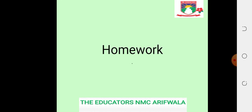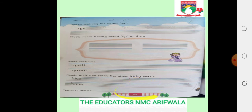Now the teacher will tell you about your homework. Your homework is: you will solve book page number 68. You have to write and say the sound Q-U. You have to learn Q-U-A-I-L, quail. You have to read both sounds and then write Q-U-A-I-L, quail. Then write words having the Q-U sound and write those letters.